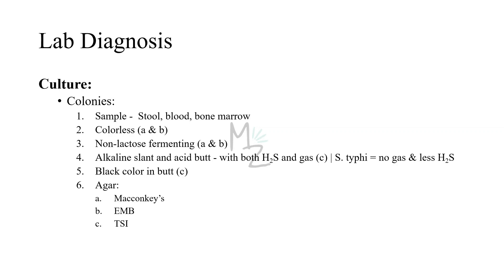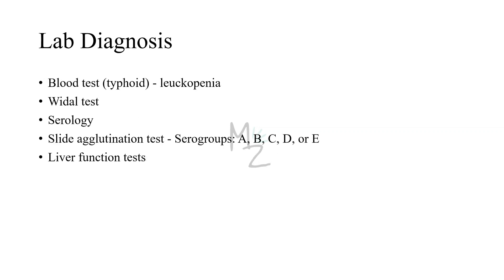Salmonella typhi is a major exception — it does not form gas and produces only a small amount of H2S. In a person suffering from typhoid, blood tests show leukopenia and anemia. Liver function tests are often abnormal, indicating hepatic involvement. The Salmonella isolate can be identified and grouped by the slide agglutination test into serogroups A, B, C, D, or E based on its O antigen. The diagnosis can also be made serologically by detecting a rise in antibody titer in the patient's serum — this is done with the Widal test.